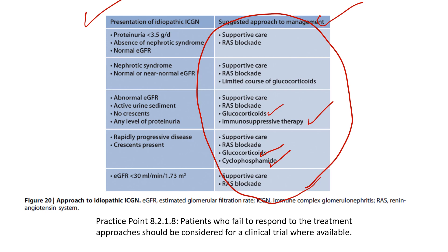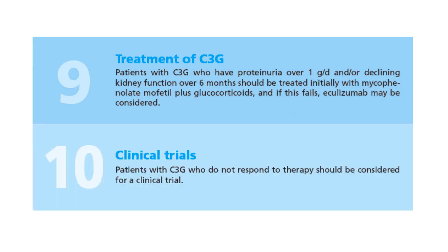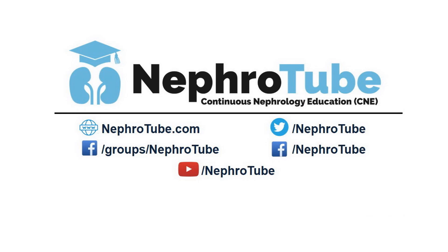For C3 glomerulopathy: if the patient has proteinuria greater than one gram per day and/or declining kidney function over six months, start with mycophenolate mofetil (MMF) plus glucocorticoids. If not responding, eculizumab may be considered, although it is very expensive. If the patient does not respond to MMF, glucocorticoids, and eculizumab, the patient should be considered for a clinical trial.